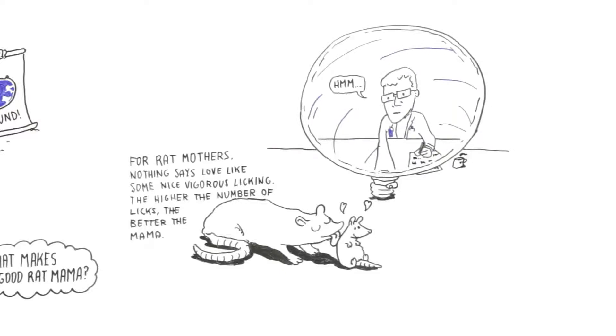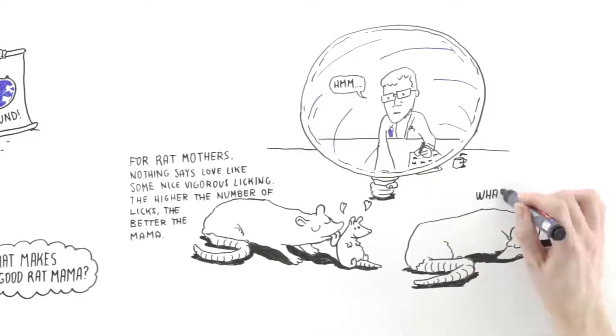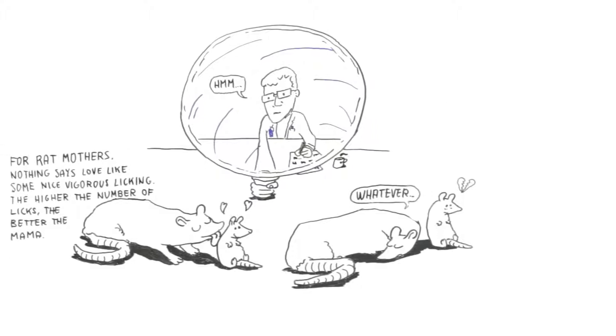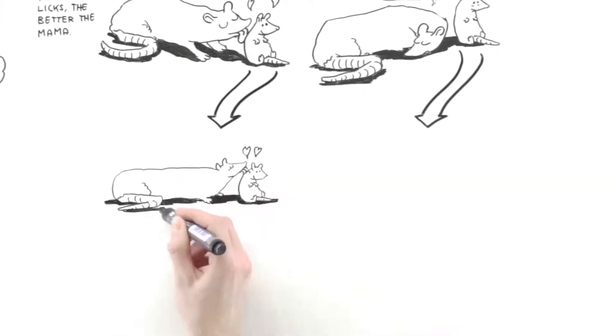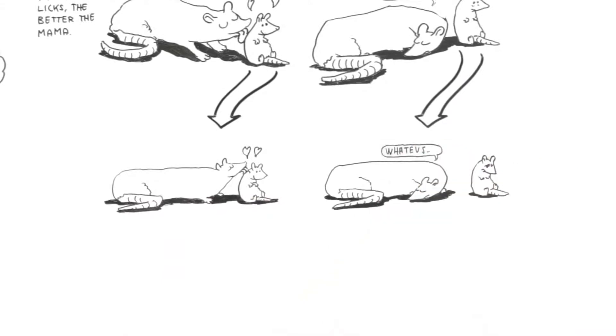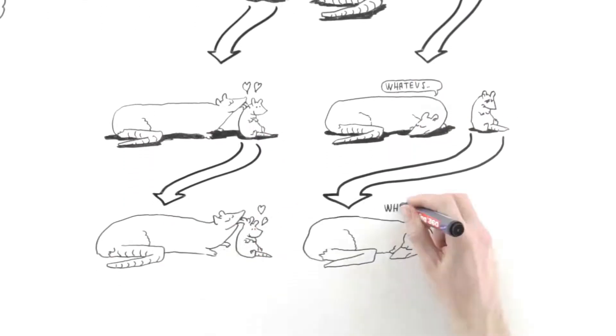With this in mind, the researchers compared two groups of rat mothers. One that licked their babies a lot and another that didn't. They found that when babies grew up, they carried their mama's behavior with them and passed it on to the next generation and the next one and so on.